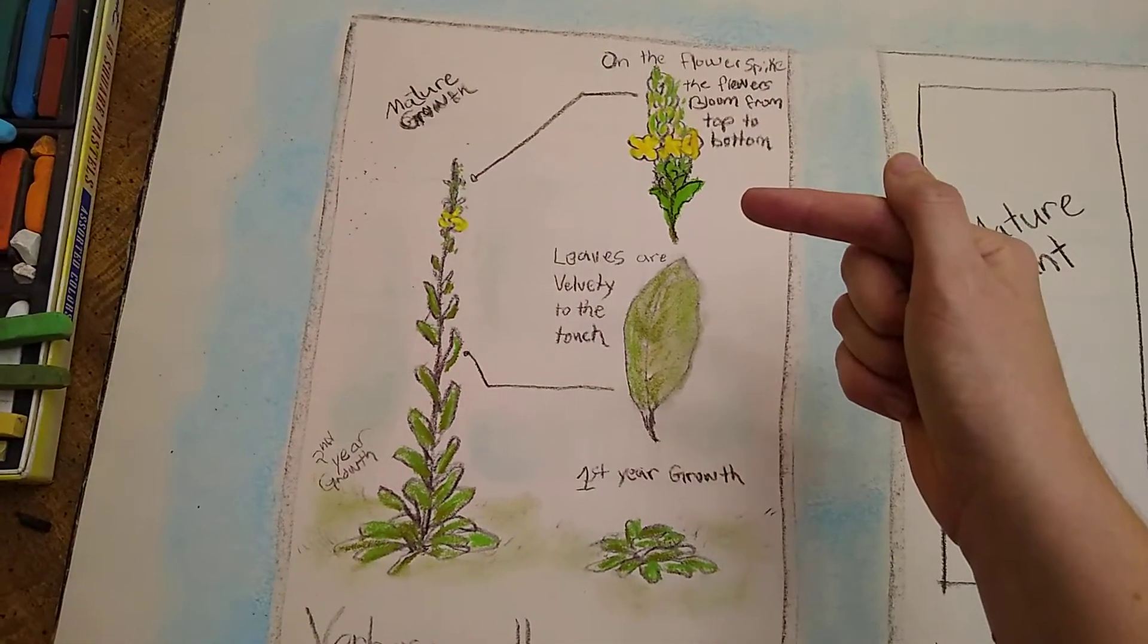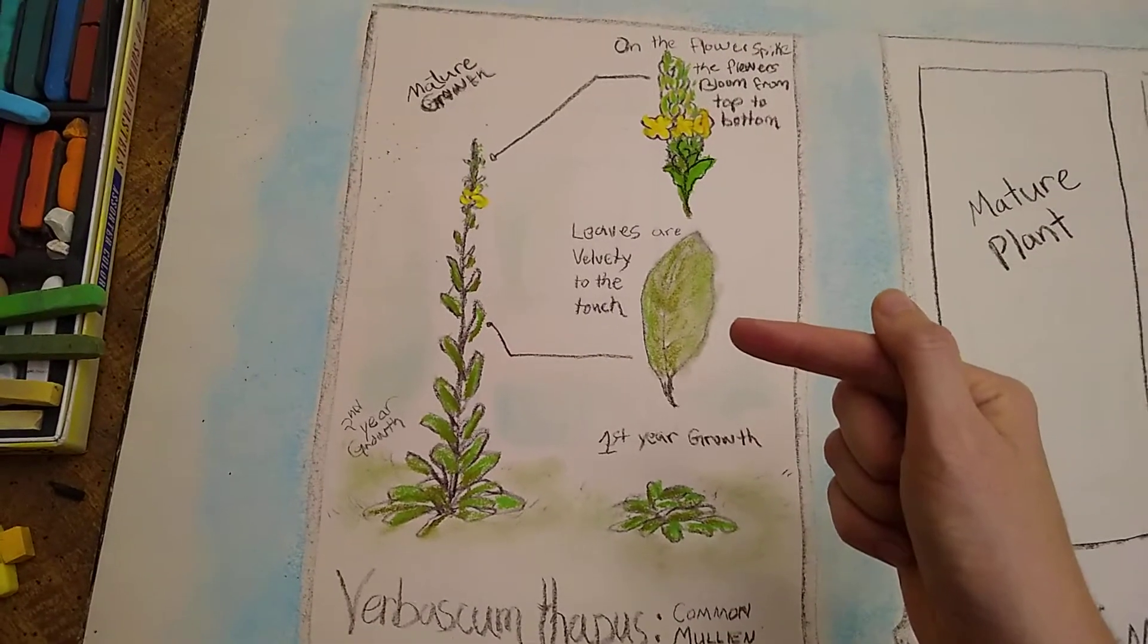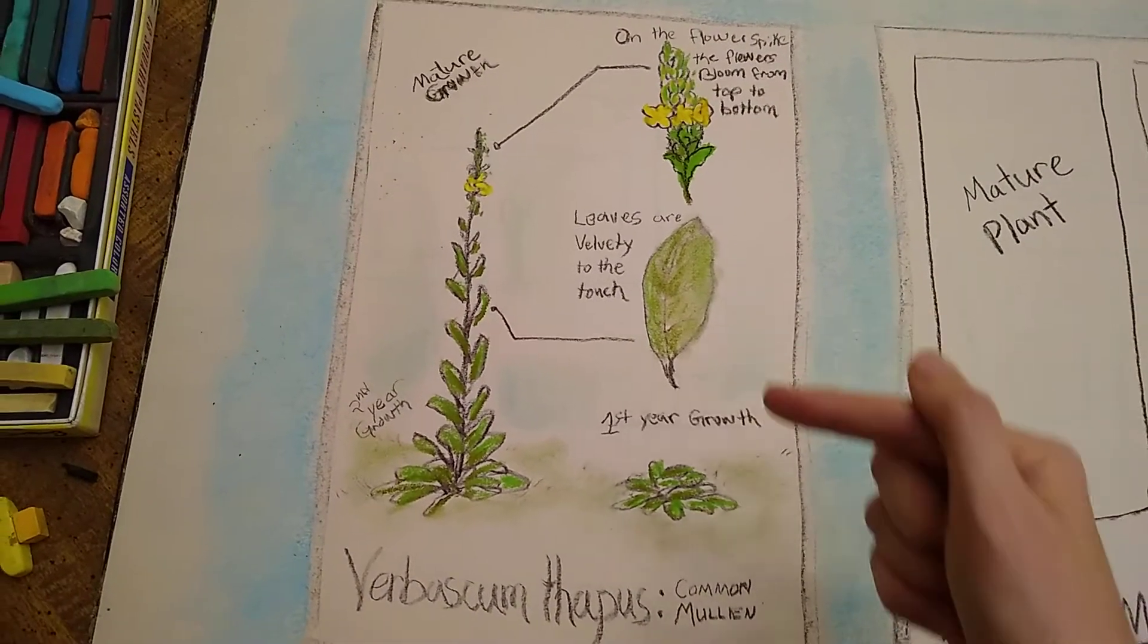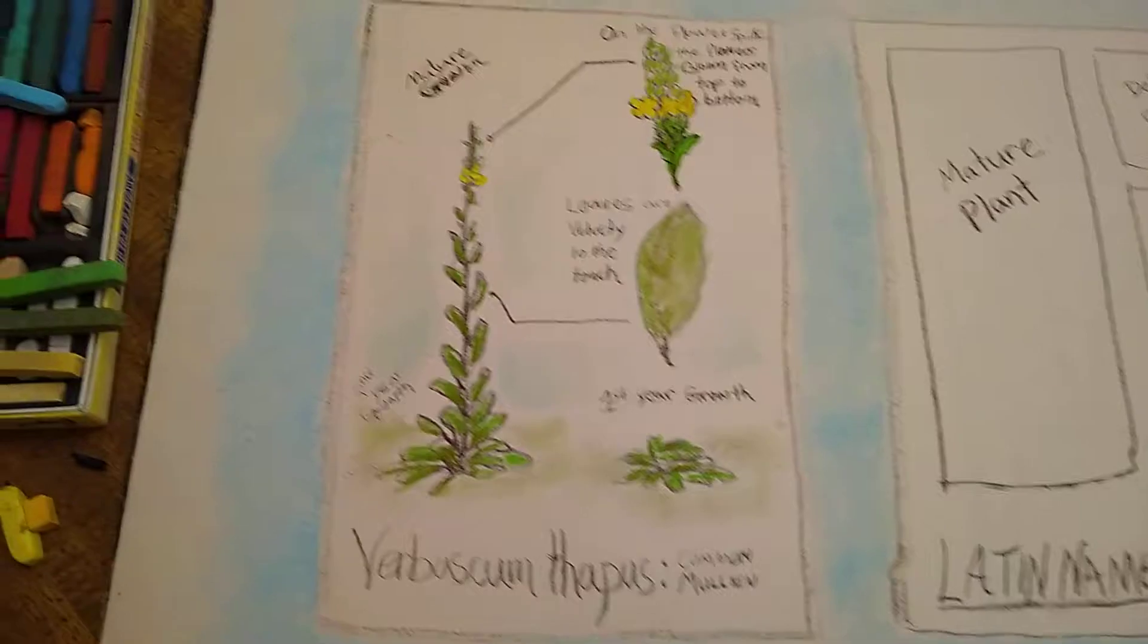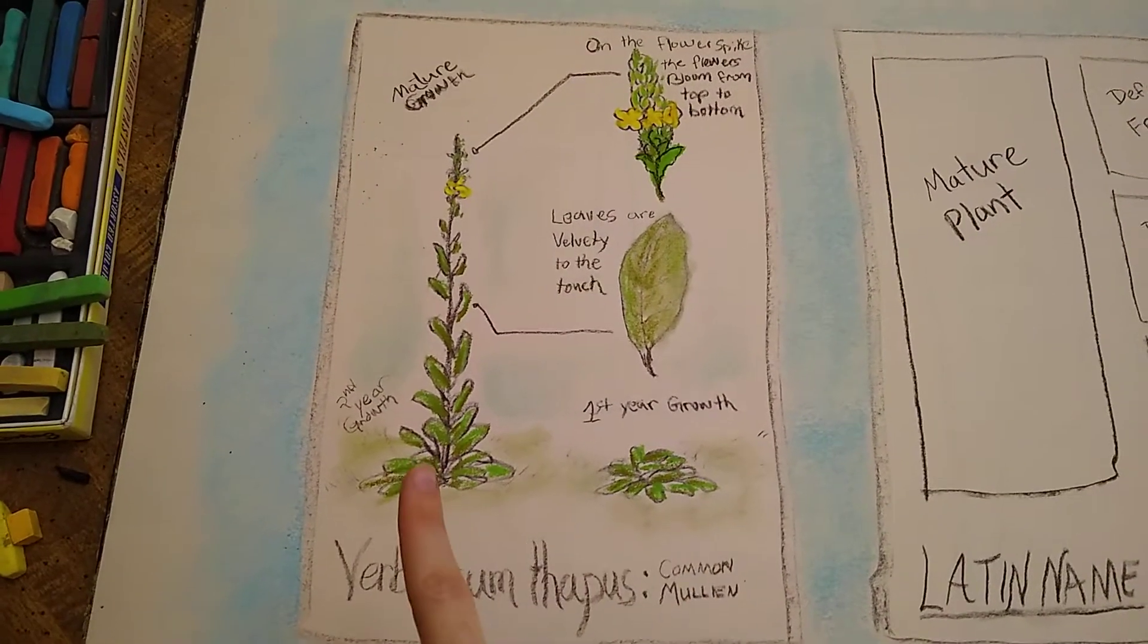The flower spike. The flowers bloom from top to bottom. The leaves. Leaves are velvety to the touch. And I've also chosen to show you first year growth versus second year growth.